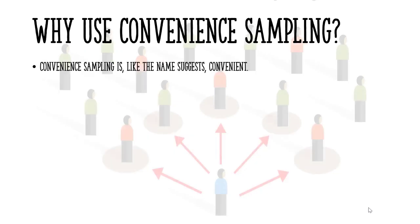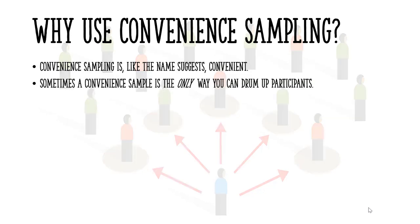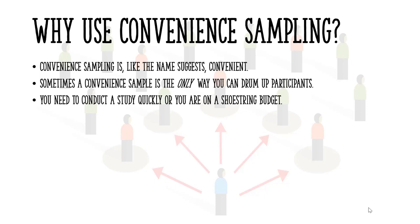So why use convenience sampling? Although it is, like the name suggests, convenient, it runs a high risk that your sample will not represent the population. However, sometimes a convenience sample is the only way you can round up participants — it could be a matter of taking what you can get. Convenience sampling does have its uses, especially when you need to conduct a study quickly or you're on a shoestring budget.